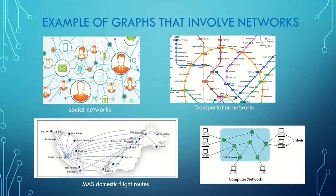Here are some examples of graphs that involve networks. The first one is social networks, followed by transportation networks — this is the mass domestic flight routes — and the last one is the computer network.